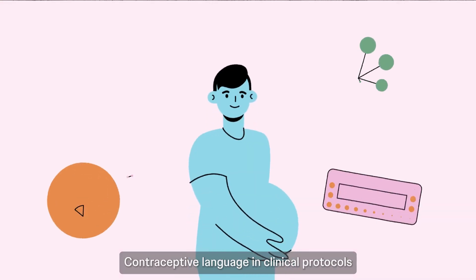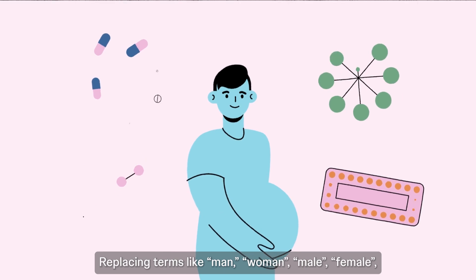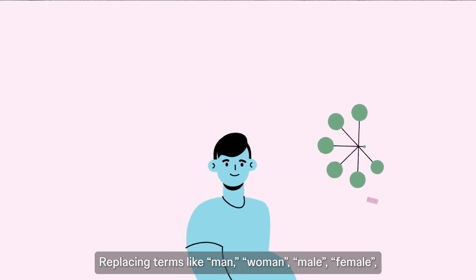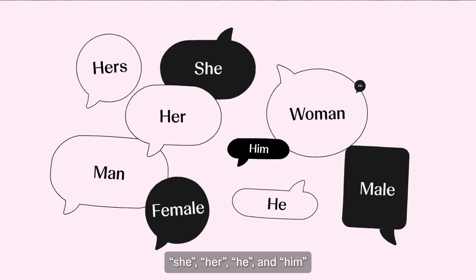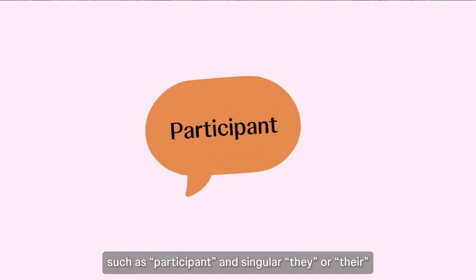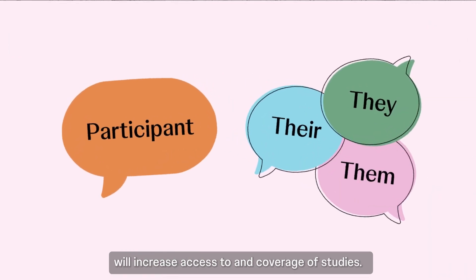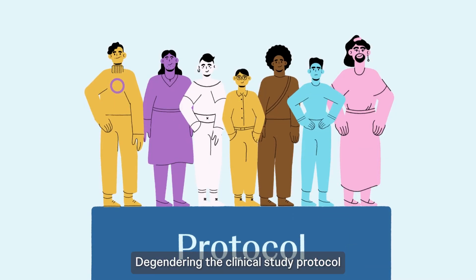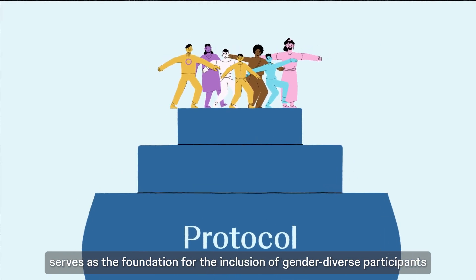Contraceptive language in clinical protocols is another area of improvement. Replacing terms like man, woman, male, female, she, her, he, and him with gender-neutral and medically relevant terms — such as participant and singular they or their — will increase access to and coverage of studies. De-gendering the clinical study protocol serves as the foundation for the inclusion of gender-diverse participants.